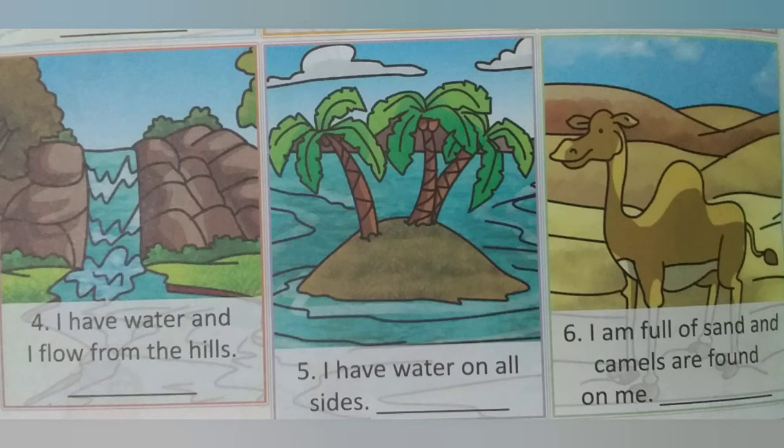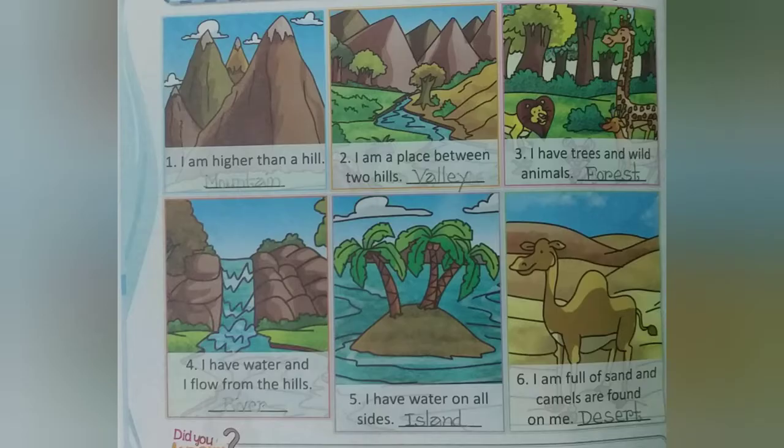Next, Number 5: I have water on all sides. Answer is Island. Next, Number 6: I am full of sand and camels are found on me. Answer is Desert. Students, here is the answer key. All of you check your answers here. Okay?